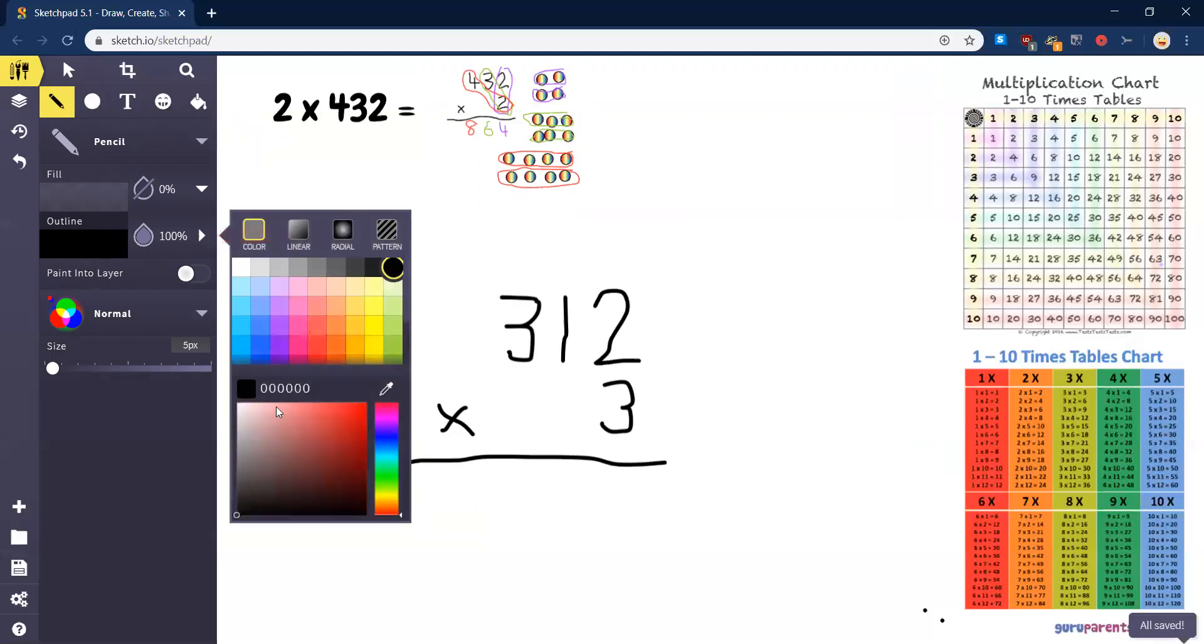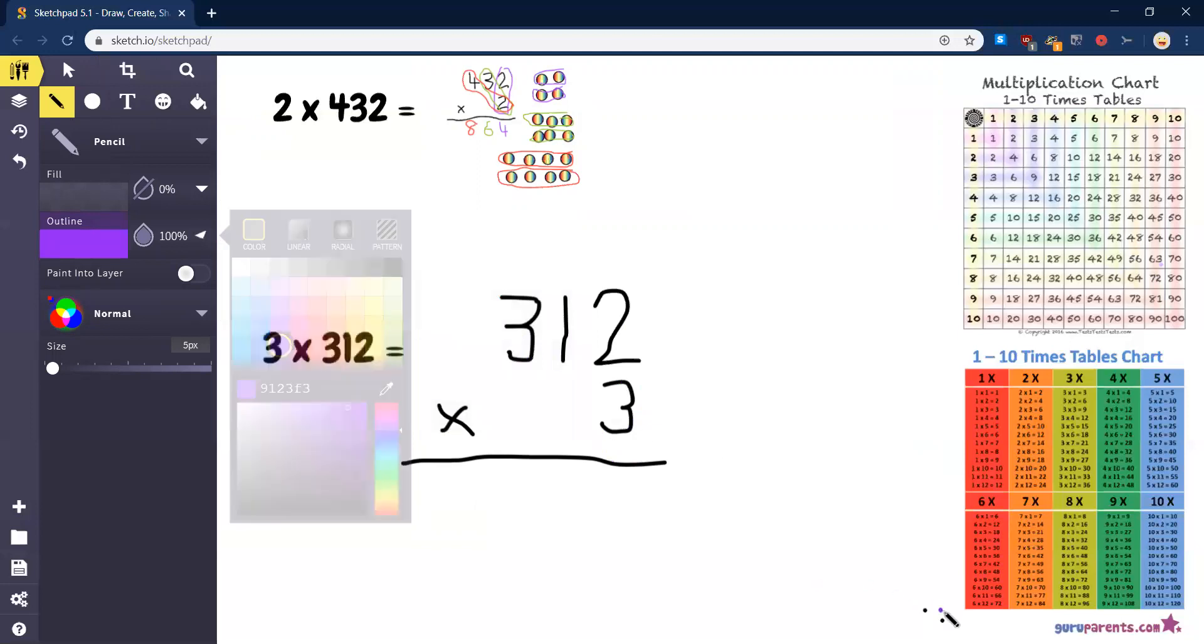First thing I'm going to do is I'm going to start off with that small number. Number at the bottom, the three, and I'm going to multiply that with the two in 312. I'm not going to draw the arrays. Let's try to work quicker and see how fast we can do this one. I'm not in that much of a hurry, but we're just going to use these a bit quicker. So three times two. Three times two equals six. And I can check it up here. Three times two equals six. Perfect. There's your answer there.